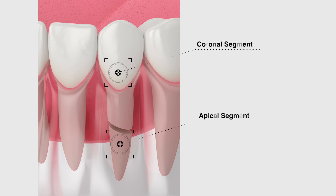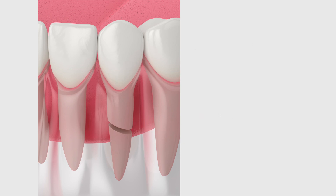The treatment for a root fracture depends on whether or not the coronal segment has come completely out of the mouth. If the coronal segment has been knocked out of the mouth, then you need to refer to the avulsion guidelines for treatment. If however the coronal segment is still attached, or attached and even loose, the treatment will be pretty similar.